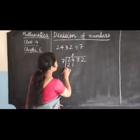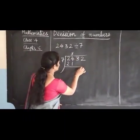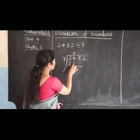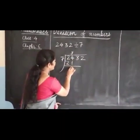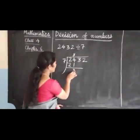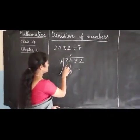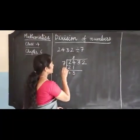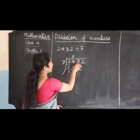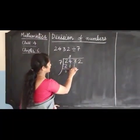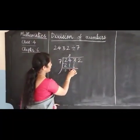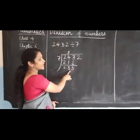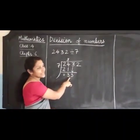Now let's subtract it. 4 minus 1 is 3. 2 minus 2 is 0. Bring down the next number. Now the number is 33.